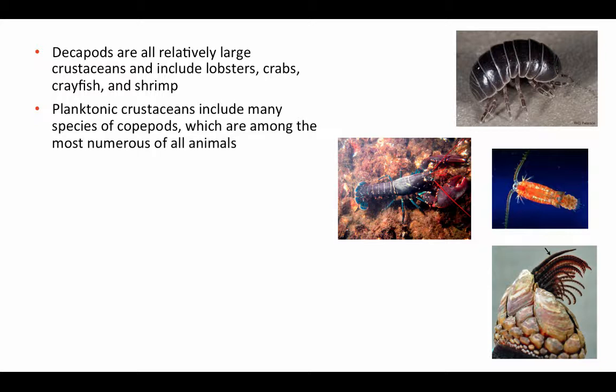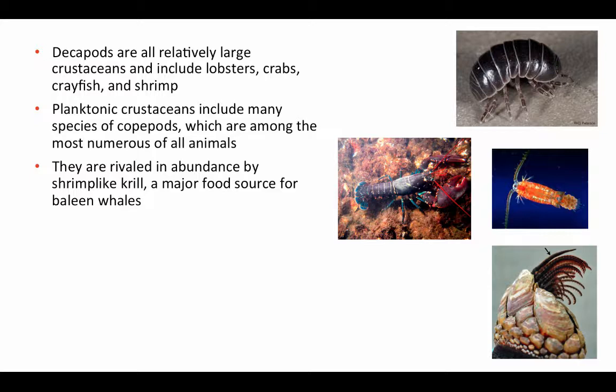Planktonic crustaceans — those floating around in the water column — include many species of copepods, which are among the most numerous of all animals. These are zooplankton, microscopic animals floating in the water column. Nearly as numerous are the shrimp-like krill, which are the major food source for many baleen whales. Baleen whales swim with their mouths open, using a filter of baleen to scoop up and filter krill out of the water in the millions.